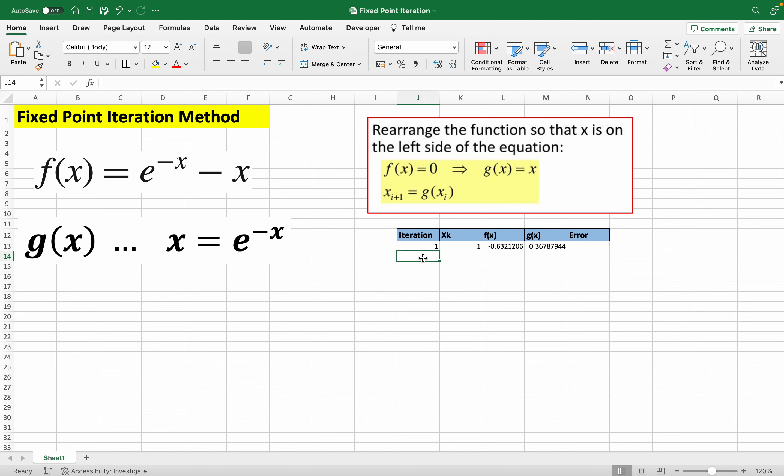Now we move on to our second iteration. This time, for our x guess, we don't have to make any other guess, because the next value for x is the value we got for g(x). So we take this and put it there. Afterwards, we just drag this.